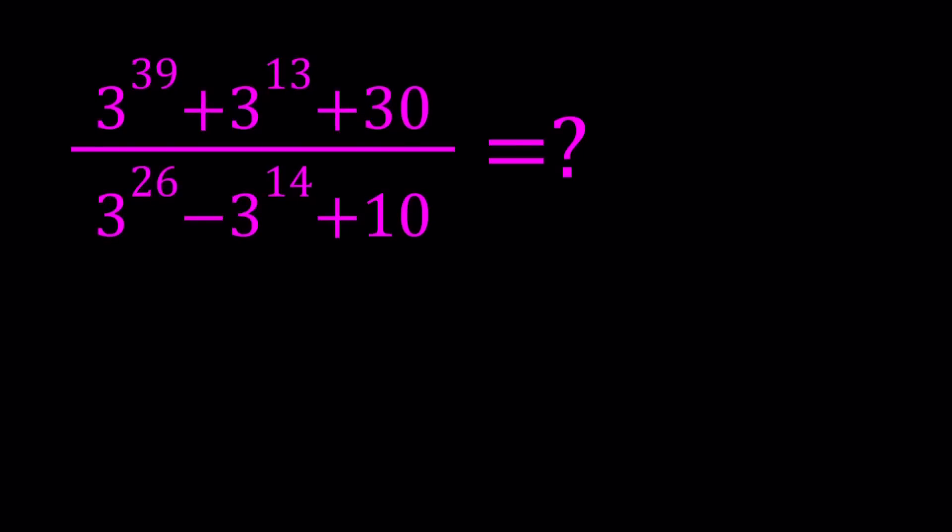Hello everyone. In this video, we're going to be simplifying a numerical expression. In the numerator, we have 3 to the power of 39 plus 3 to the power of 13 plus 30. And in the denominator, we have 3 to the power of 26 minus 3 to the power of 14 plus 10.